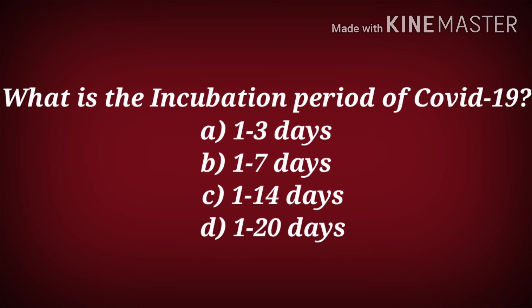What is the incubation period of COVID-19? Is it 1 to 3 days, 1 to 7 days, 1 to 14 days, or 1 to 20 days? The correct answer is 1 to 14 days.